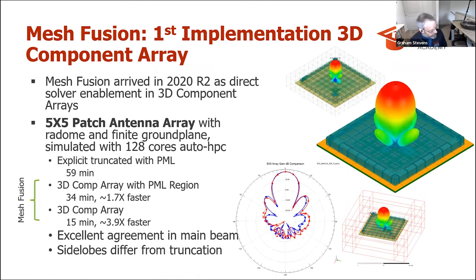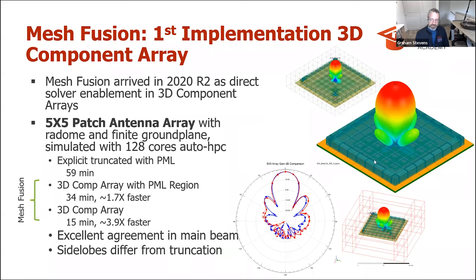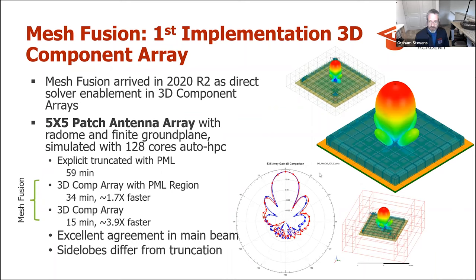Mesh fusion was first implemented as a 3D component array — the second workflow — where we have a repeatable array and each individual cell of the array is modeled separately: specifically the corners, the sides, and a center. With those three separate components meshed individually and in parallel, then assembled into an array, you get a huge time saving because you only have to model those three components to get results for the entire array.